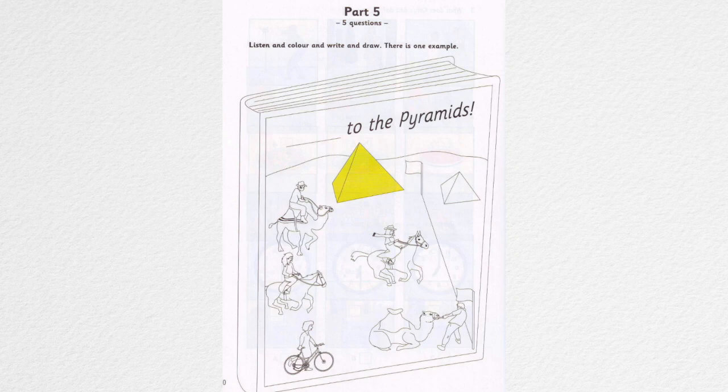3. And now for some drawing. Can you see the woman with the bike? Yes. What's she doing? It's broken and she's pushing it. She looks hot. Shall I draw a hat on her head? Yes. And then colour it pink.